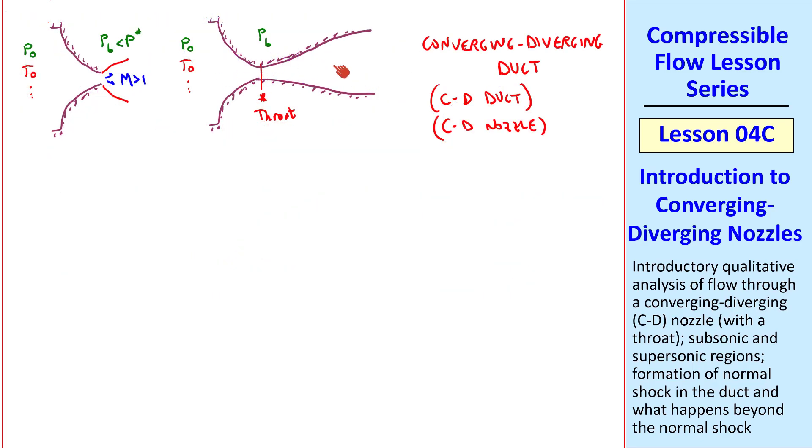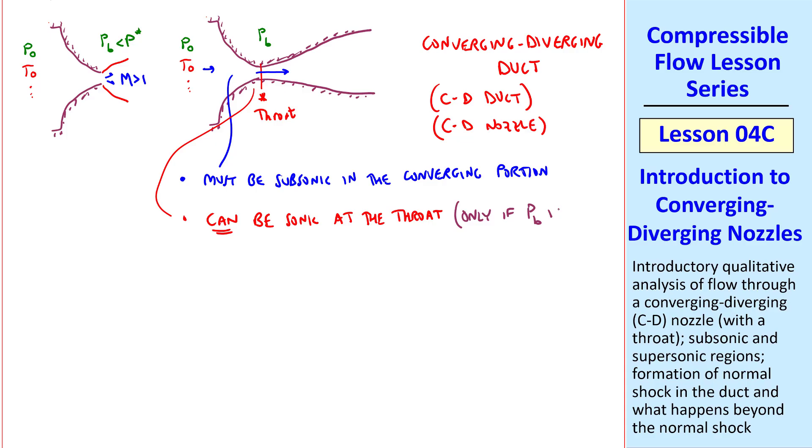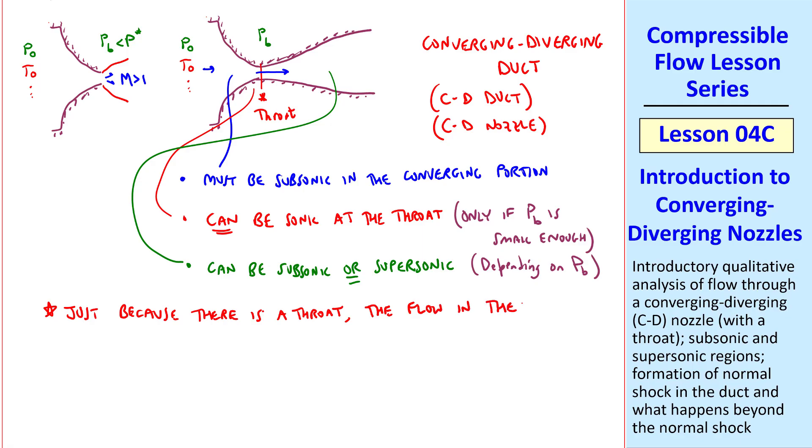Let's talk about the regions in this flow. The flow must be subsonic in the converging portion of the duct to the left of the throat here, where flow is obviously from left to right. The flow can be sonic at the throat, but may not be. It's sonic only if Pb is small enough. The flow in the diverging part can be subsonic or supersonic, again depending on Pb. I'll emphasize something here. Just because there is a throat, the flow in the diverging portion of the duct is not necessarily supersonic.